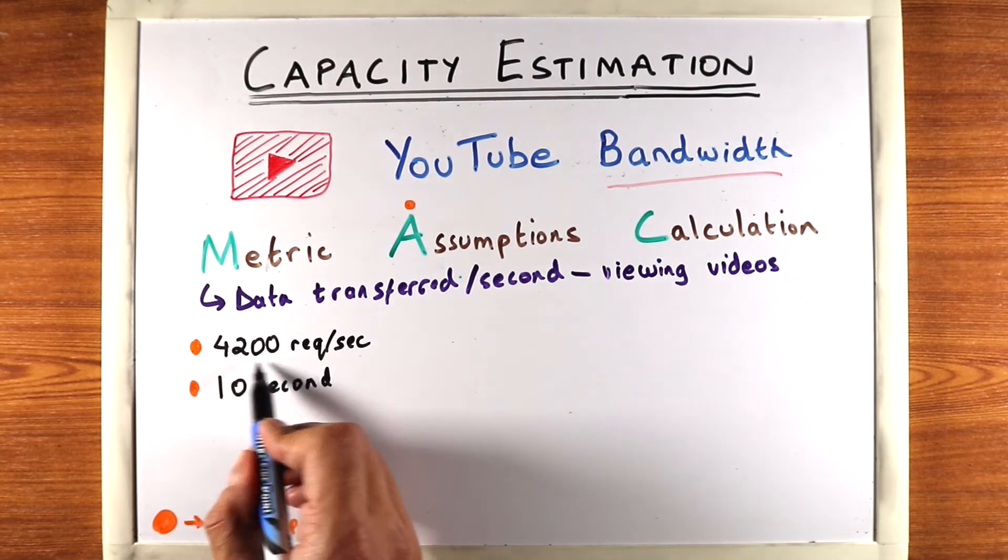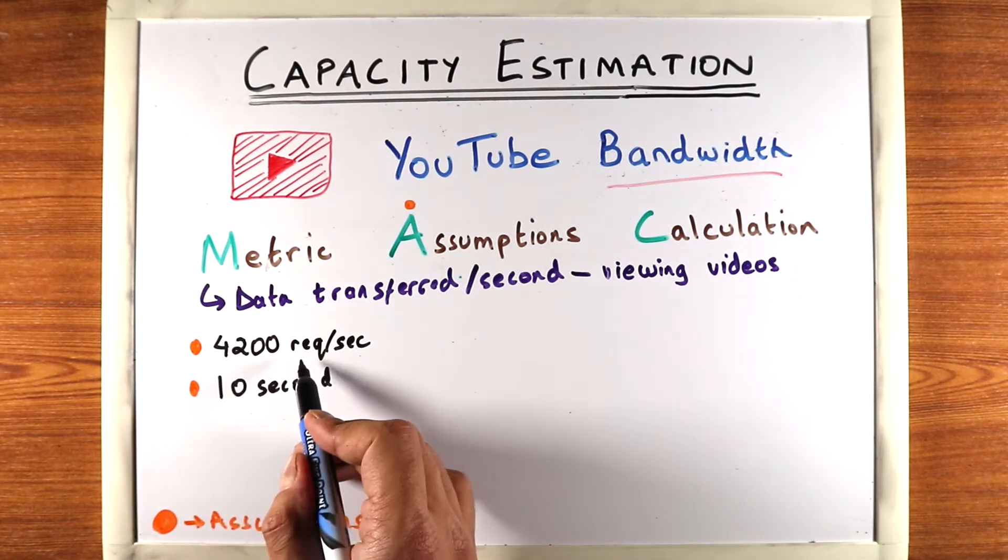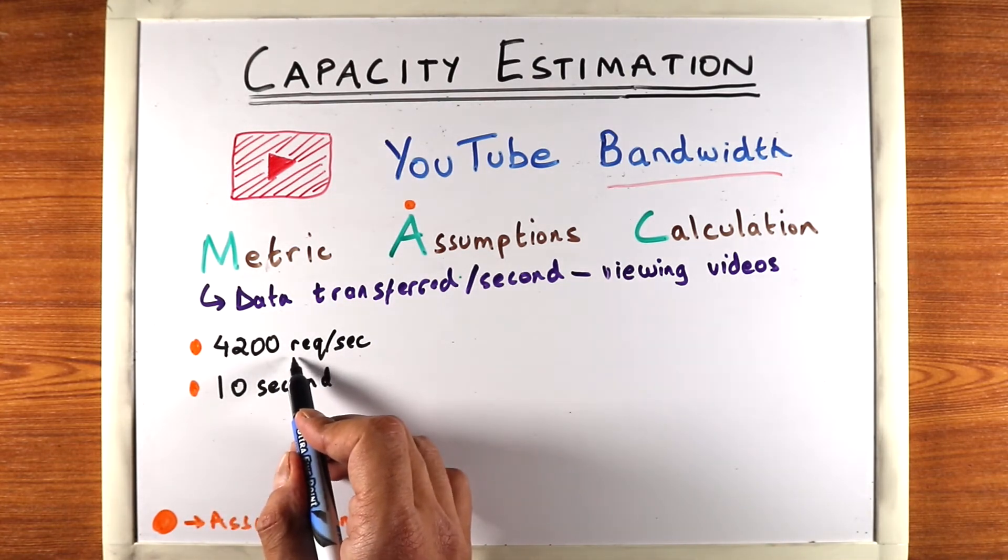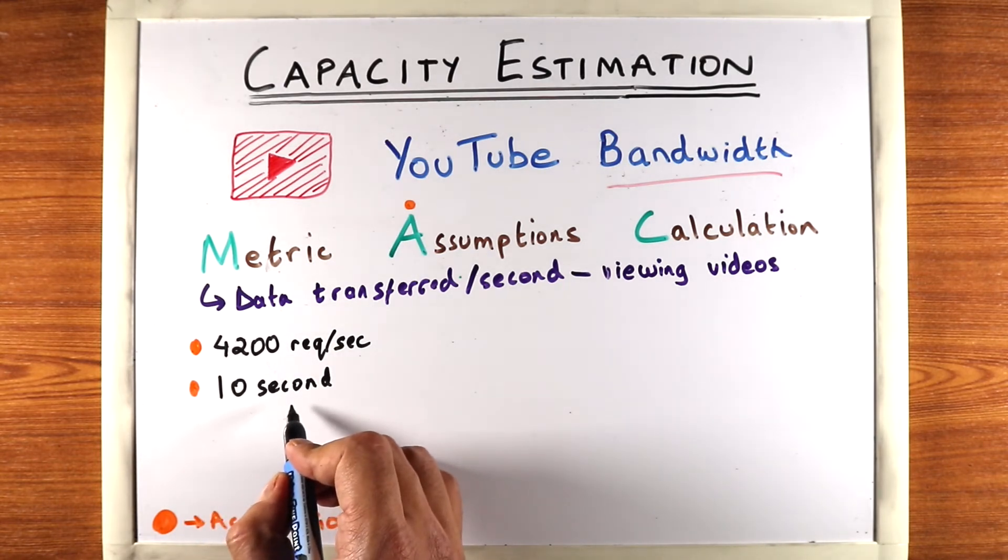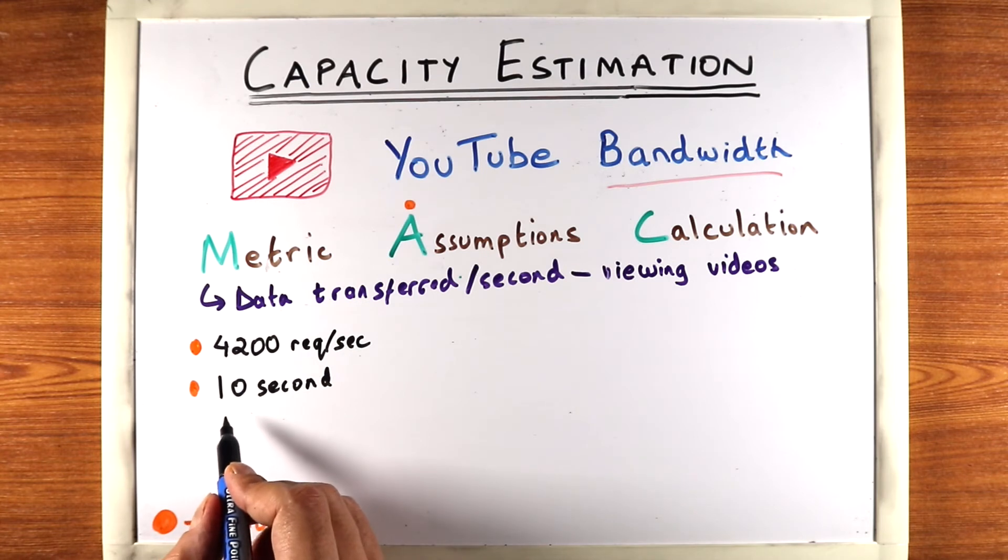So for this we know how many requests are there per second. All we need to do is figure out how much data is transferred per request. We know that 10 seconds of video is transferred per request and so we can estimate the size of data that this 10 second video requires.